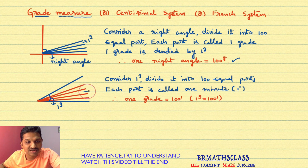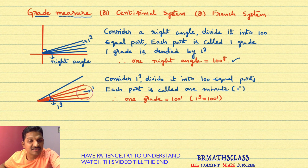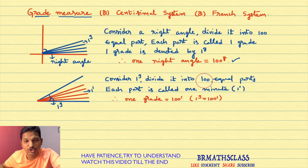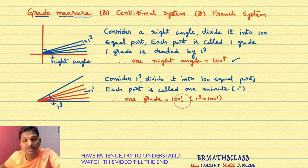For example, this part is one minute. One minute is denoted by one superscript single dash. In degree measure also, we learned this notation. So one minute, two minutes, three minutes, four minutes — total how many parts are there? We divided this one grade into 100 equal parts, so one grade equals 100 minutes.